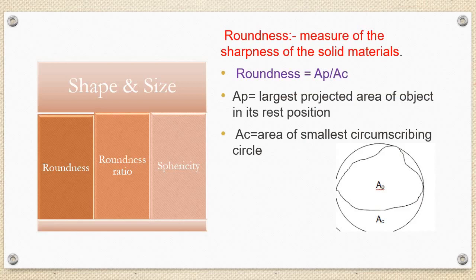Shape and Size. It is further classified into roundness, roundness ratio and sphericity. Roundness is defined as the measure of the sharpness of the solid material. It is given by the formula Ap divided by Ac, which is the largest projected area of the object in its rest position to the area of the smallest circumscribing circle.